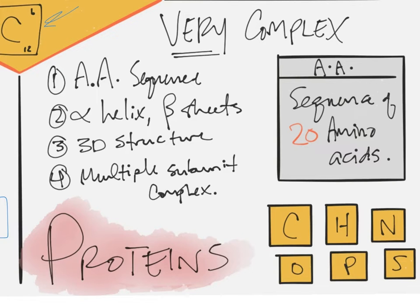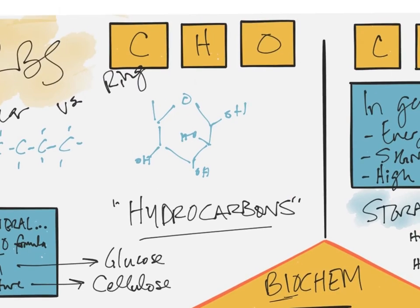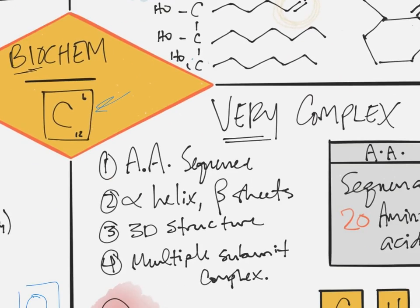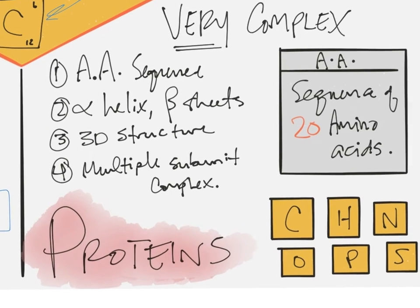So if I see a nitrogen, I know I either have to be a protein or a nucleic acid because carbs and lipids don't include nitrogen. So we're very complex. There's four layers of structure. The first layer of structure is the amino acid sequence.